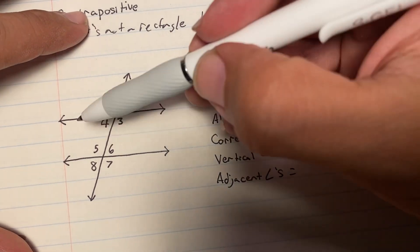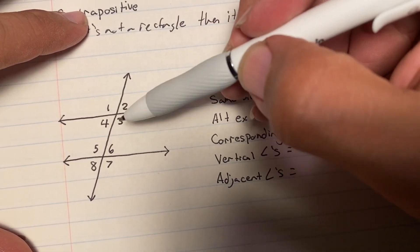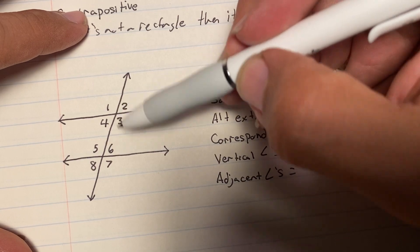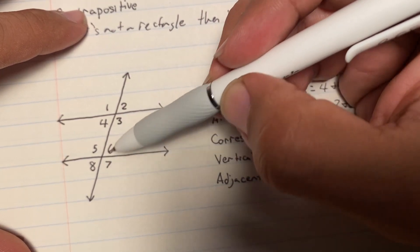Vertical angles. Vertical angles are 1, 3, 2, 4, 5, 7, 6, 8.